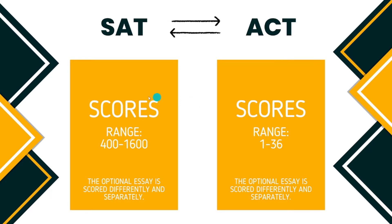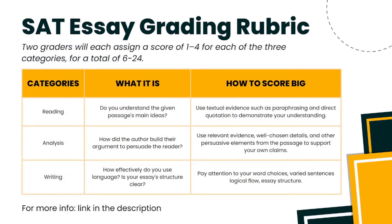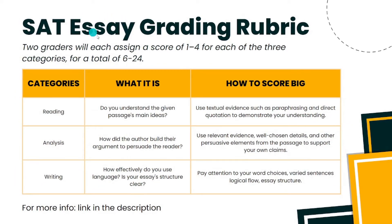Depending on the kind of university you're looking to get into, 1450 and above is a good aim for the SAT, and 30 to 32 are good scores for the ACT. A lot of students are anxious about and struggle with the essays. When finding an SAT or ACT tutor in Indonesia, they generally only focus on the math section instead of the writing bit. So let's quickly go over those grading rubrics.